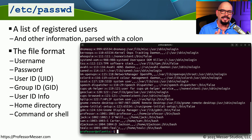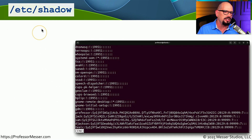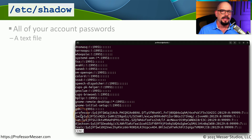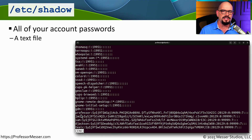Having a single file readable by everyone with usernames and a hashed version of the password leaves the system susceptible to a brute force attack. So the passwords were moved out of the password file into a different file known as the shadow file, also in the /etc directory. The shadow file is a protected file that cannot be viewed by others on the system unless they have elevated rights and permissions.